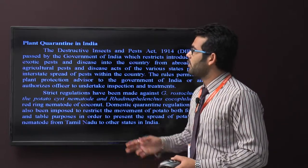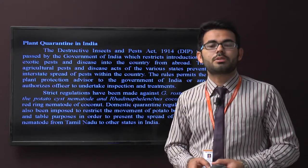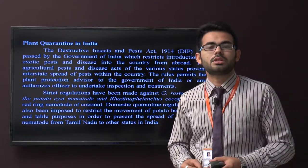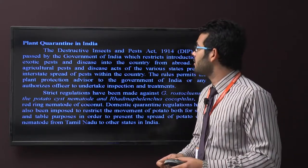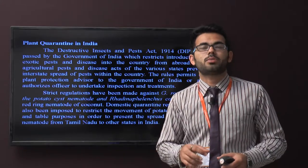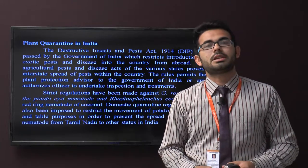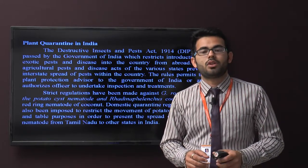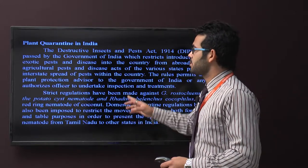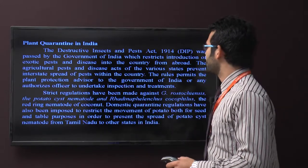In India, the Destructive Insect and Pest Act of 1940 was passed by the government of India which restricts the introduction of exotic pests and diseases into the country from abroad. The Agriculture Pest and Disease Act of the various states prevents the interstate spread of pests within the country.